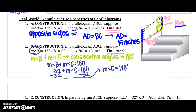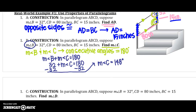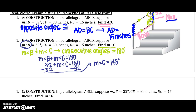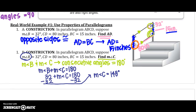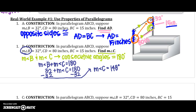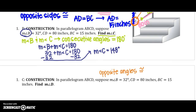Last one — using that same picture, we are asked to find the measure of angle D. Notice that angle D is opposite angle B. We know that opposite angles are congruent in parallelograms. So the measure of angle D equals the measure of angle B. Since angle B is 32 degrees, the measure of angle D equals 32 degrees.